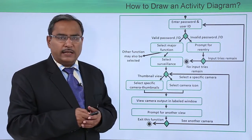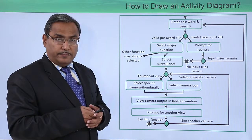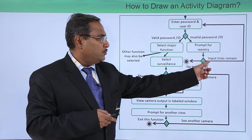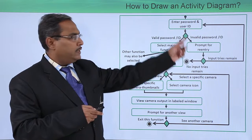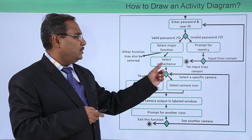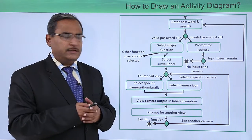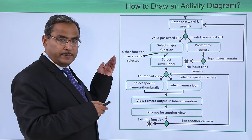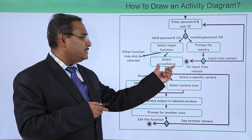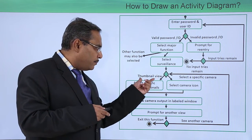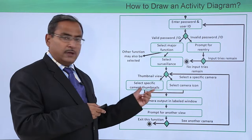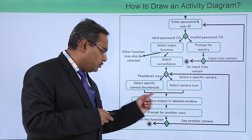Now let us consider another example: entering a password and user ID. If the password and ID are invalid, the system prompts for re-entry and the user tries again. Otherwise, the control reaches the final state. Next, the user selects a major function — here it has been selected as 'select surveillance.' We then have a thumbnail view and select a specific camera, and the respective portion gets selected and the control moves forward.